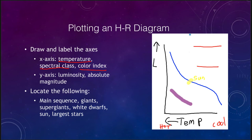The largest stars are up in the upper right-hand corner — they are very cool but also very large. These are the supergiants. The giant stars are also located in that upper right region.